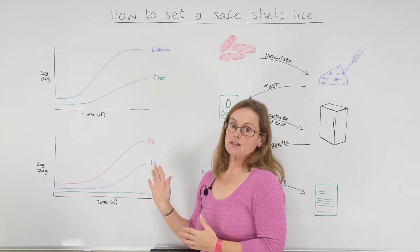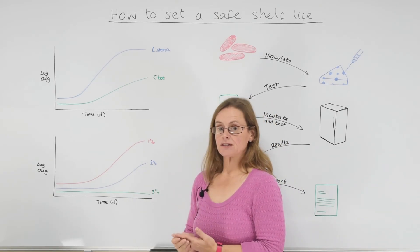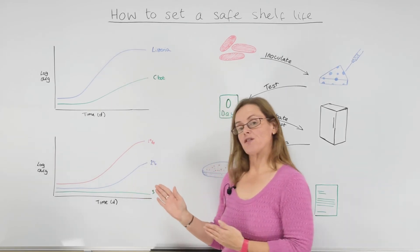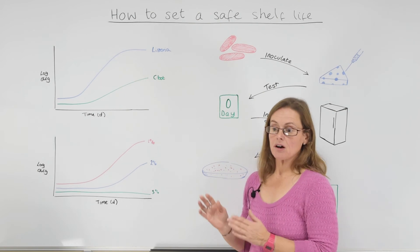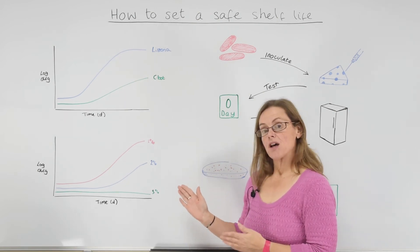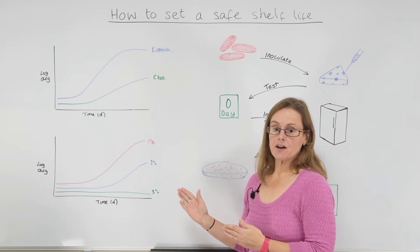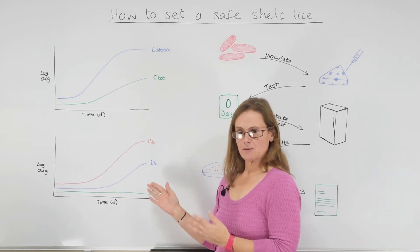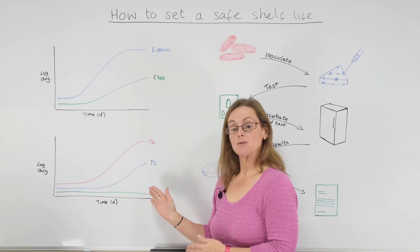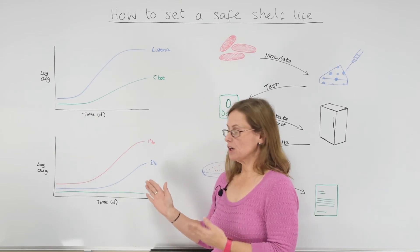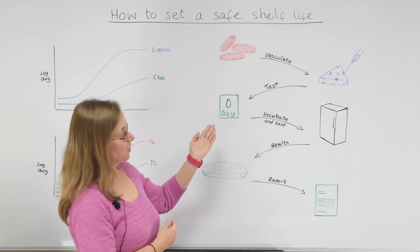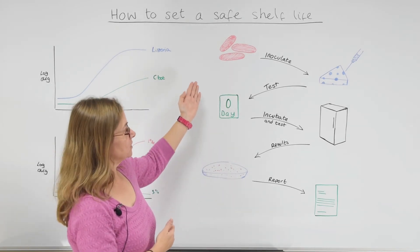If you have done the predictive modelling and it has shown that growth hasn't occurred but you want to back that up just to be sure, or if the modelling has shown that there are potential issues with growth over shelf life but you think the model might be a bit fail-safe - as they can be sometimes - and you want to prove where growth will occur, you could look at taking it one stage further and do inoculated challenge test studies.